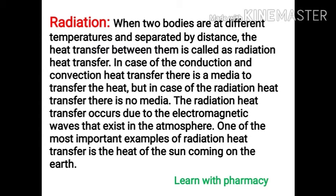The last mode is radiation. When two bodies are at different temperatures and separated by a distance, the heat transfer between them is called radiation heat transfer. In conduction and convection there is a medium to transfer the heat, but in radiation heat transfer there is no medium or intermediary. Radiation heat transfer occurs due to electromagnetic waves that exist in the atmosphere. One of the most important examples is the heat of the sun reaching the earth.